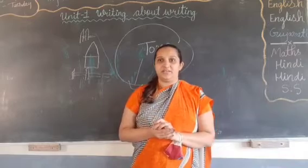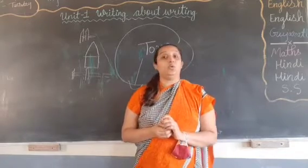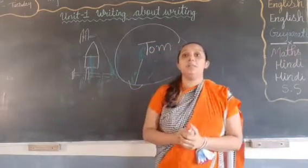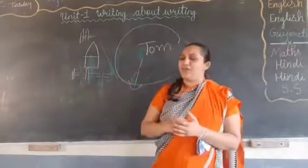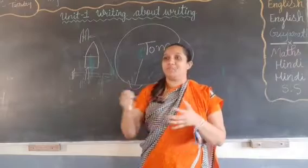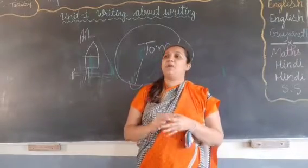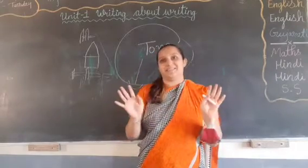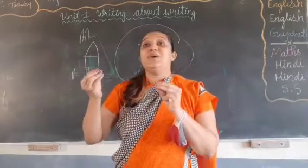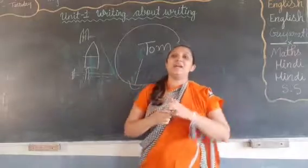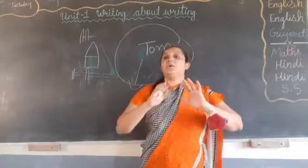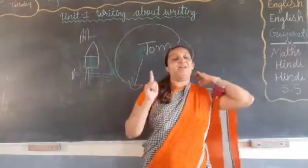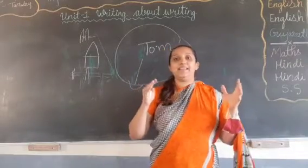Jim said no: 'I can't do that, Aunt Polly will scold me.' But Tom tried to motivate him: 'Are you scared of Aunt Polly? She'll just scold you — scolding won't hurt you.' Tom was trying to convince Jim to swap work, but Jim was smart and denied. So Tom then offered his toys — 'I'll give you my playthings, you paint while I fetch water.'